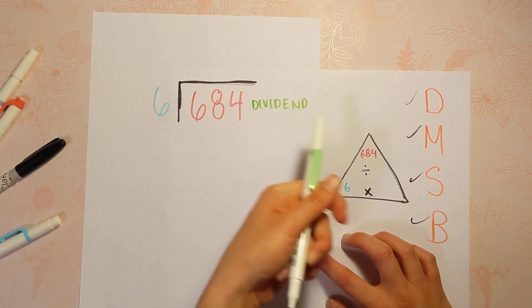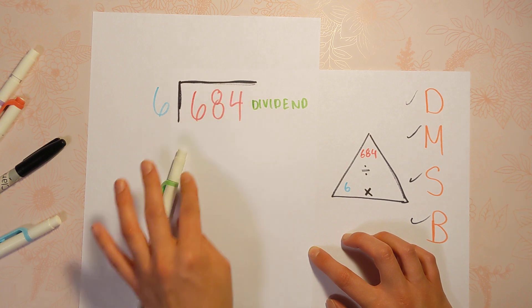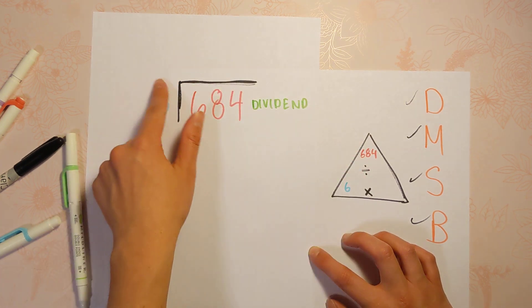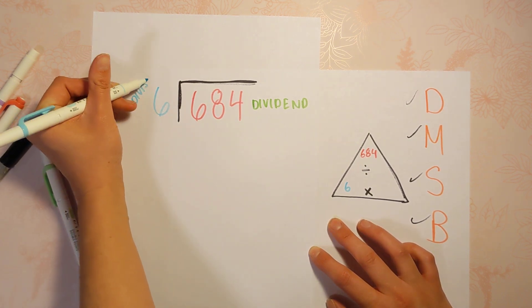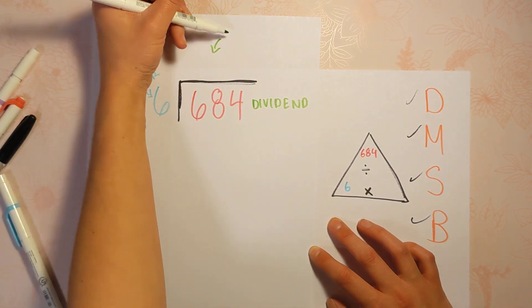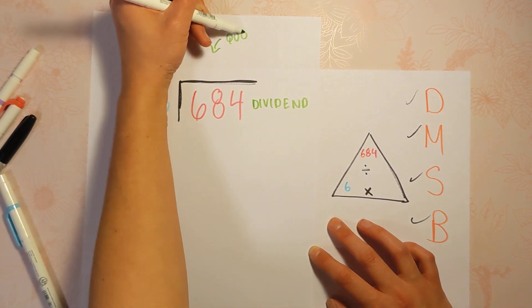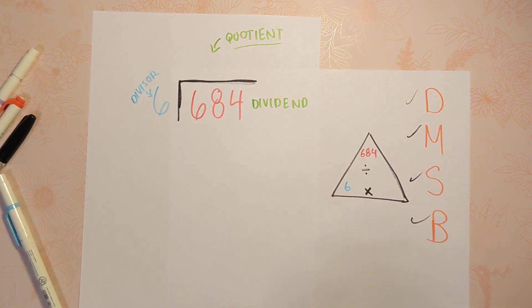The six, the one that it's getting divided by—let's say I have 684 brownies, and I'm dividing them onto six plates—the six is called the divisor. And the answer in division, whatever our answer is, is called the quotient. That's a fancy word. So just like in multiplication how the answer is called the product, and in addition the answer is called the sum, in division the answer is called the quotient. All right, so let's go ahead and get started.